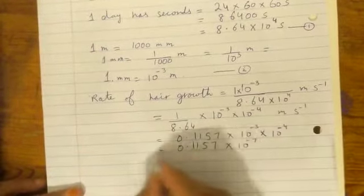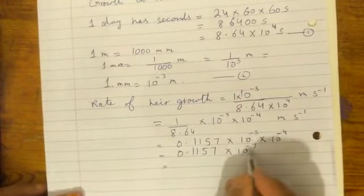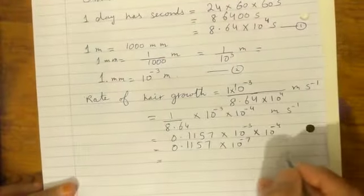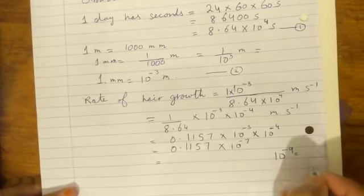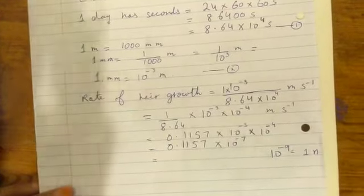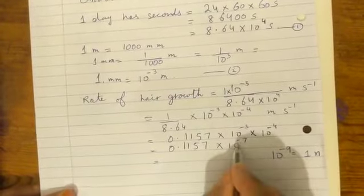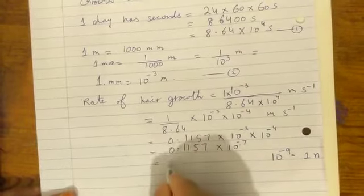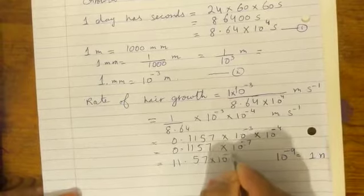After this, we need to move the decimal. One nanometer equals ten to the power minus nine meters. So we move the decimal two places to get 11.57 times ten to the power minus nine nanometers per second.